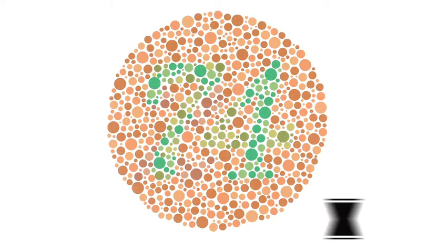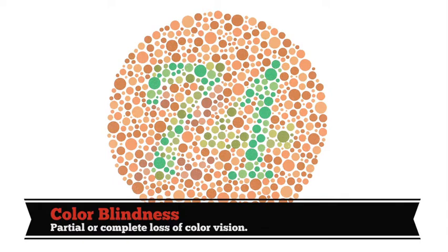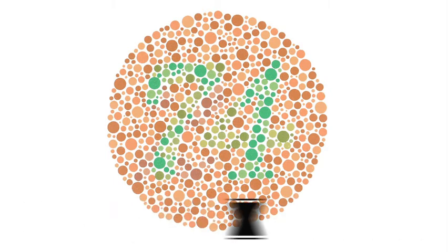First up is colorblindness. This is a visual impairment that's more common than you might think. For example, according to a 2006 report from the Howard Hughes Medical Institute, red-green colorblindness affects about 7% of the male population in the United States, which is roughly 10.5 million people. And that's just red-green colorblindness — there are numerous other types, all the way up to complete colorblindness, wherein an individual sees in grayscale.